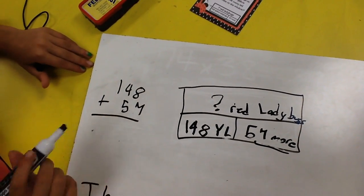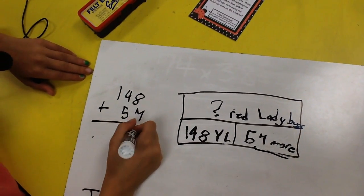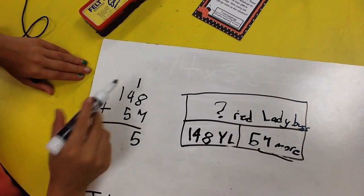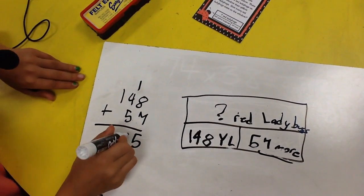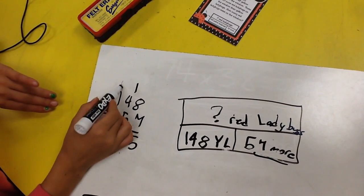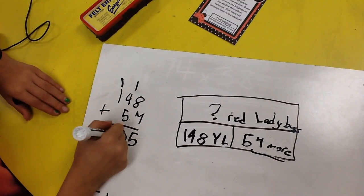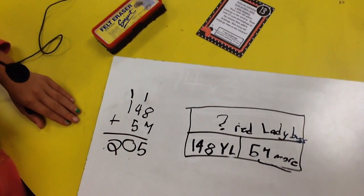We know 8 plus 7 equals 15, so we're going to have to regroup the 1. And 1 plus 4 plus 5 equals 10, so we're going to have to regroup that 10 and put a 0 there. And 1 plus 1 equals 2. And our sum is 205.